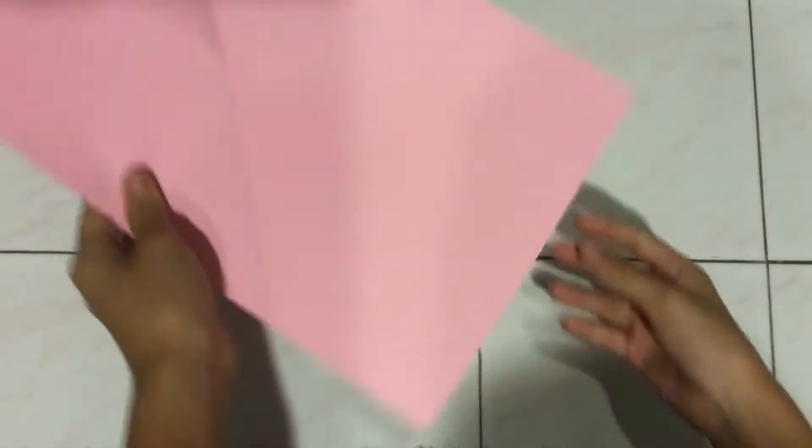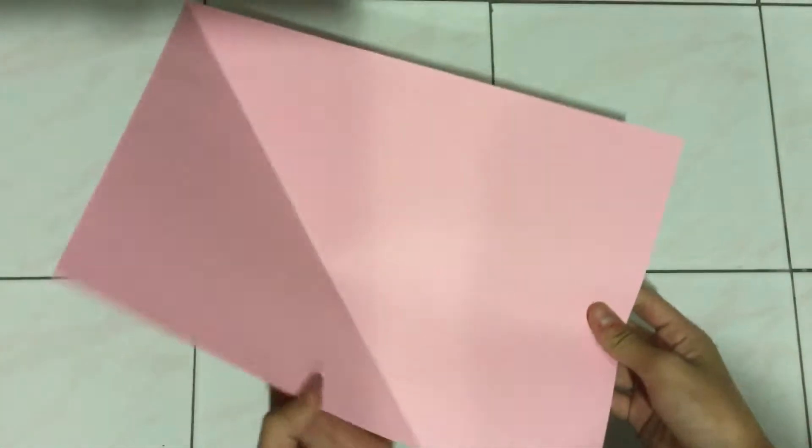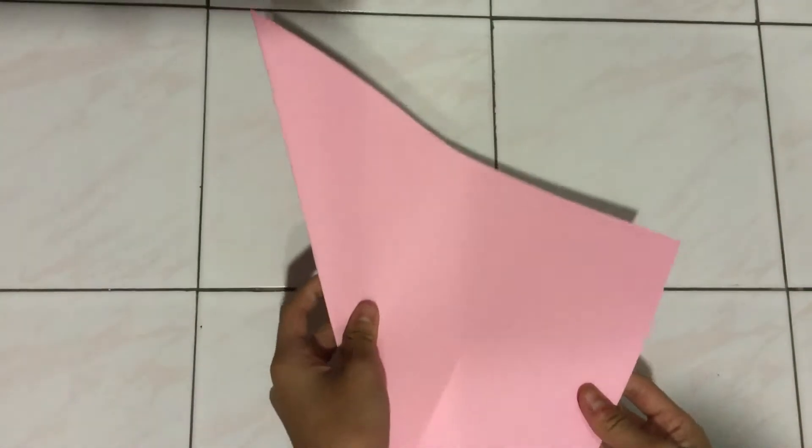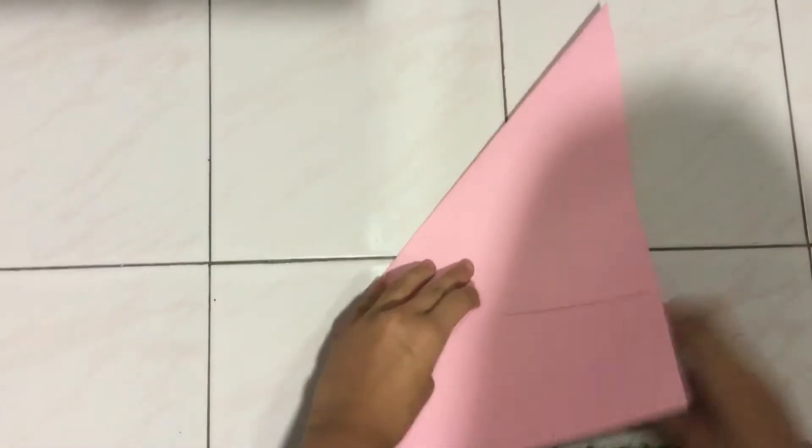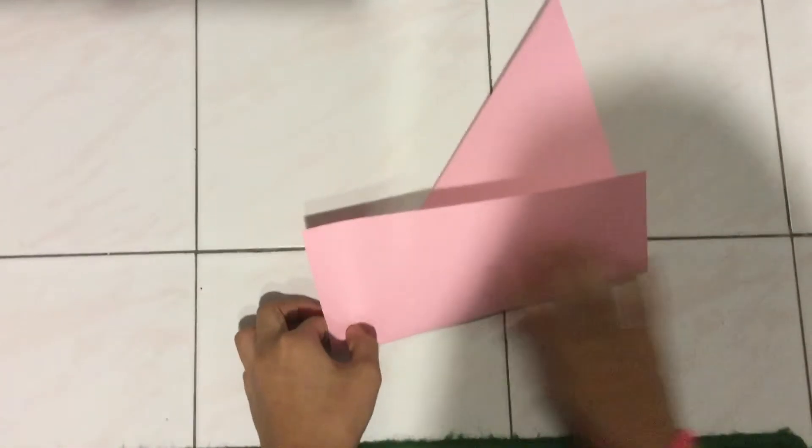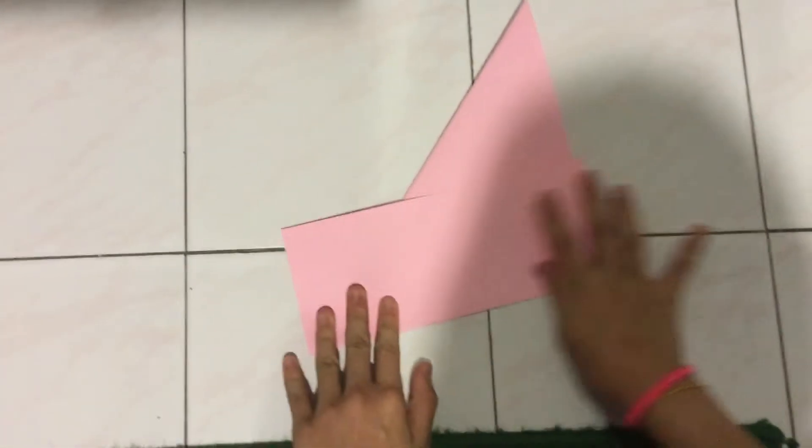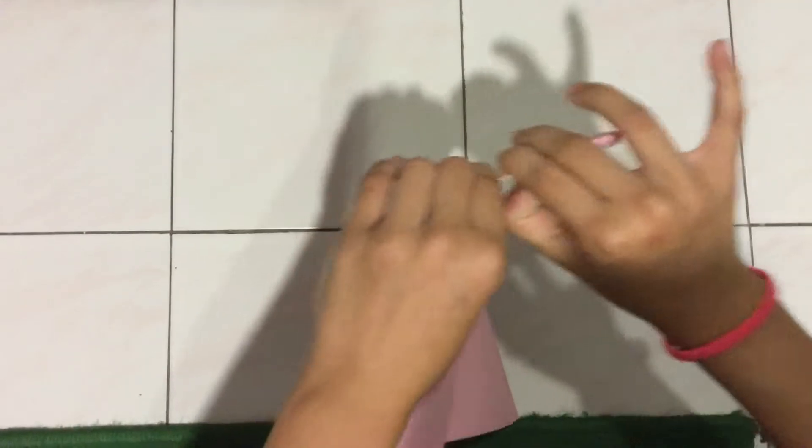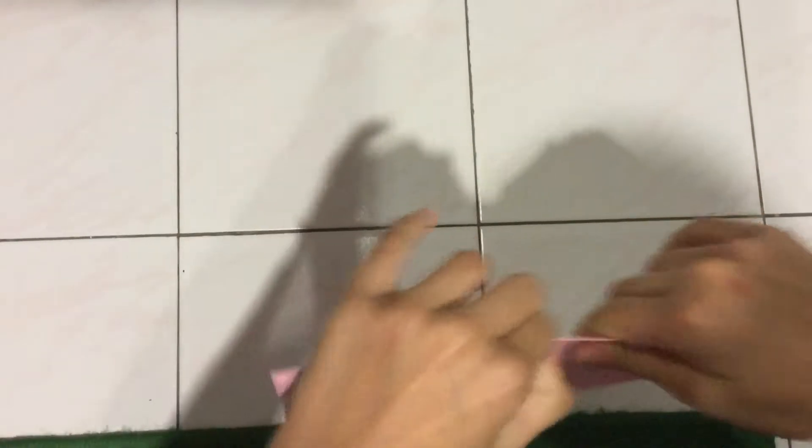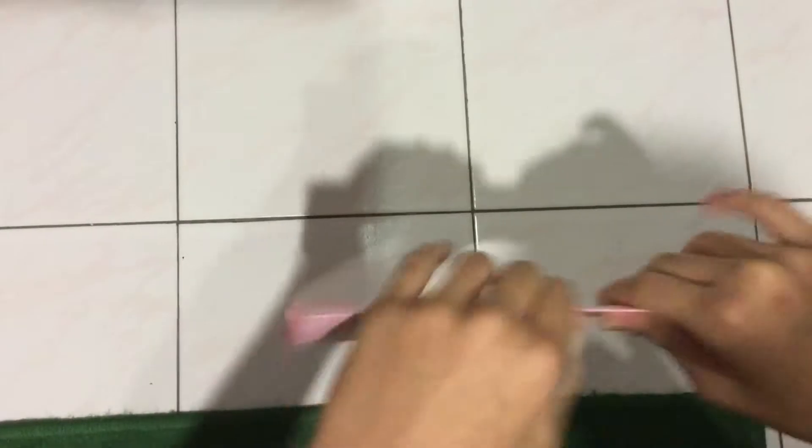So first you need an A4 paper, and then you fold it in half. I already did that, so it looks like a triangle. And then you fold this part up so there's a line here, and make sure it's very tight because you have to tear it. But if you want to, you can cut it, but I'm going to tear it because I don't have scissors right now.